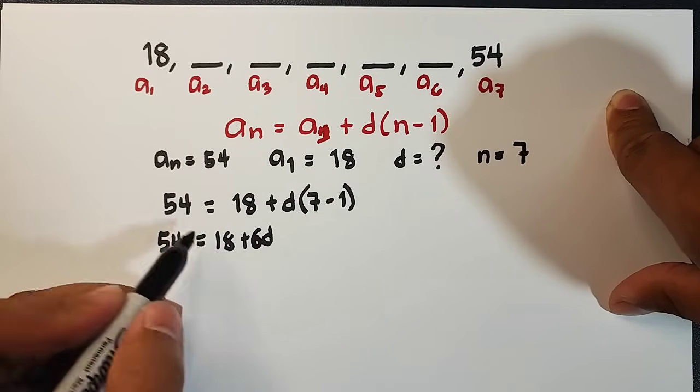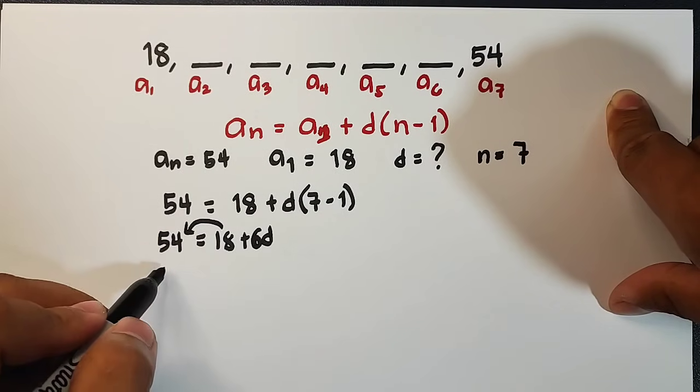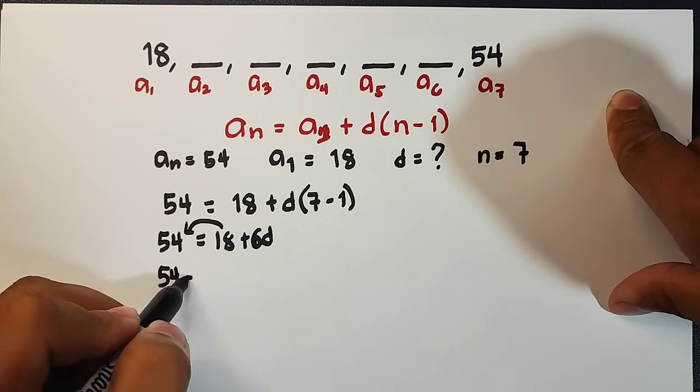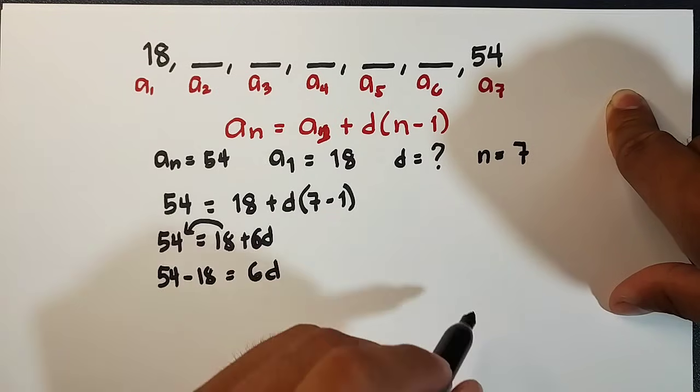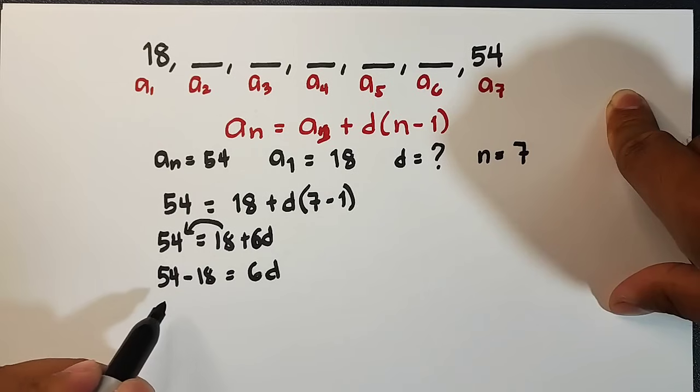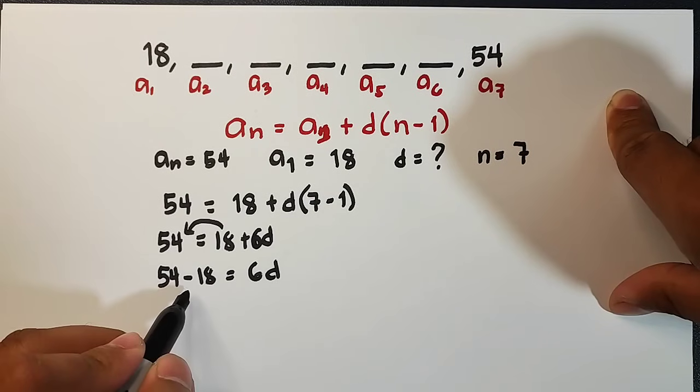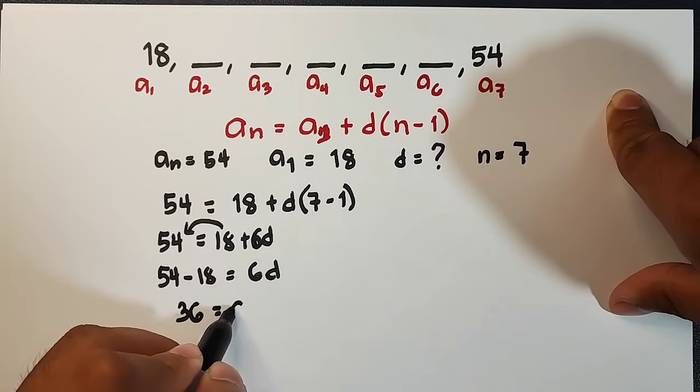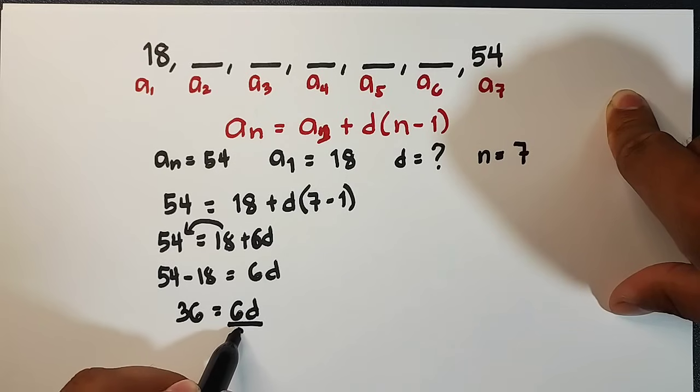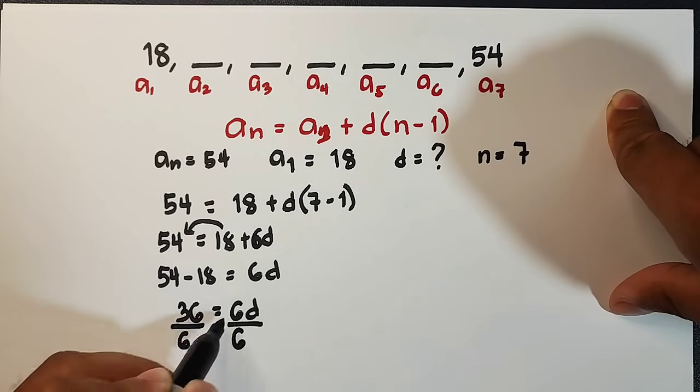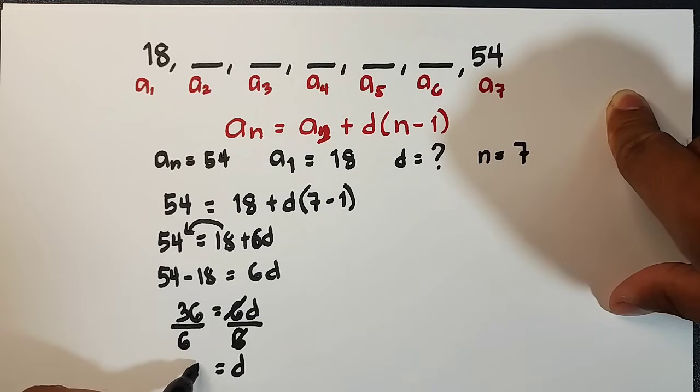Now, what we need to do is we will transpose 18 to the other side. It will become 54 minus 18 is equal to 6d. Ang target kasi natin dito is to solve for the common difference. 54 minus 18 is what? 36. And then this is 6d. To finally find the value of d, or the common difference, divide both sides of the equation by 6. Your d is equal to 36 divided by 6, which is equal to 6.